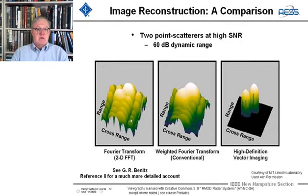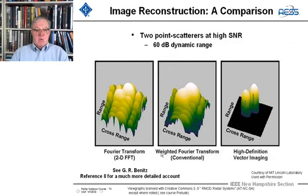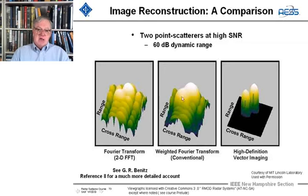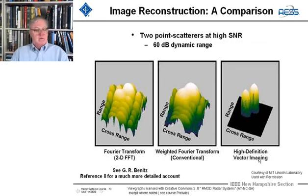For image reconstruction, let's compare three different kinds of processing using two-point scatterers with high signal-to-noise ratio and 60 dB of dynamic range that are close together. A straight 2D FFT gives relatively high side lobes. Applying conventional weighting like a cosine gives a broader beam and lower side lobes — you can't tell the points apart as easily. Then there's the magic of Jerry Bennett's high-definition vector imaging developed at Lincoln Laboratory — look at what you see. Not bad.